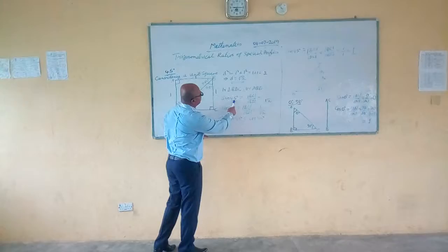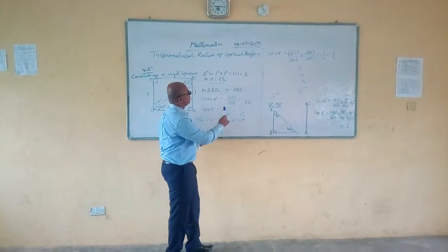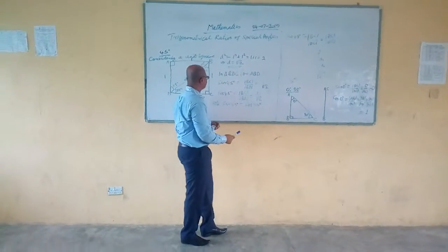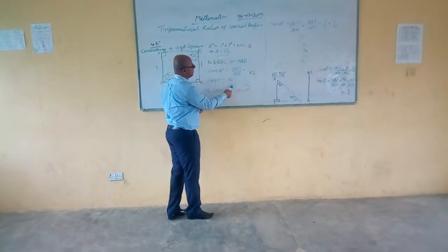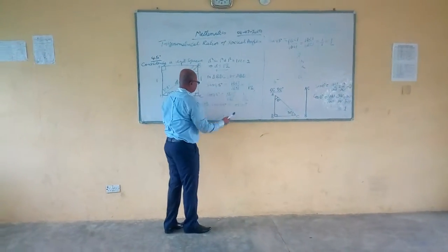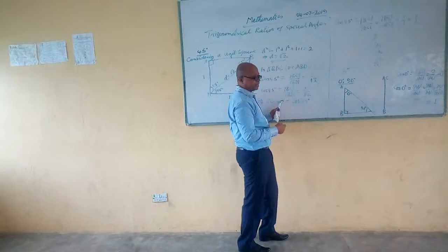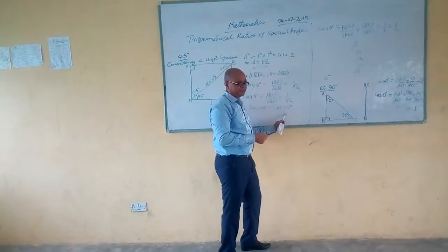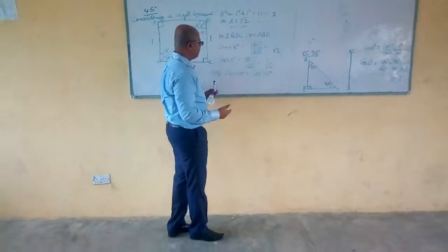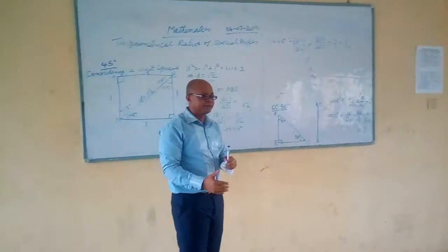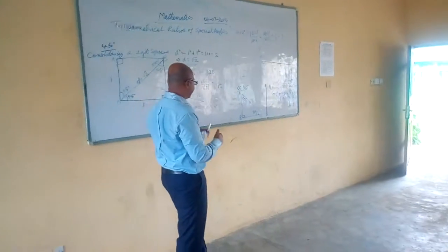We can see here that sin 45 degrees equals BC over BD equals 1 over root 2, and cos 45 degrees equals BC over BD equals 1 over root 2. So again, we see that sin 45 degrees equals cos 45 degrees. The idea of sin and cos being a sign of the complementary angle plays out again.